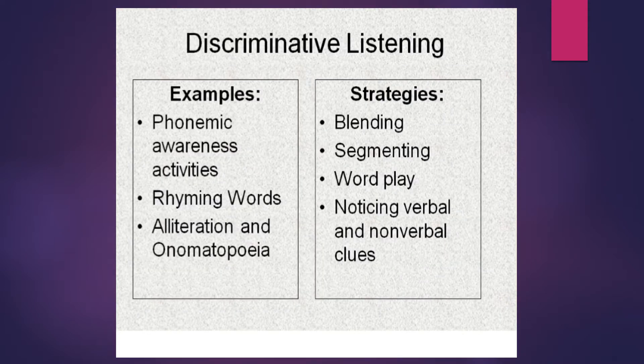Discriminative listening has to do with learning how words are put together and how language works. Examples include phonemic awareness activities, rhyming words, alliteration, and onomatopoeia. This type is probably used in the younger grades and with students who struggle with language, including students with special needs who struggle with noticing verbal and nonverbal cues.